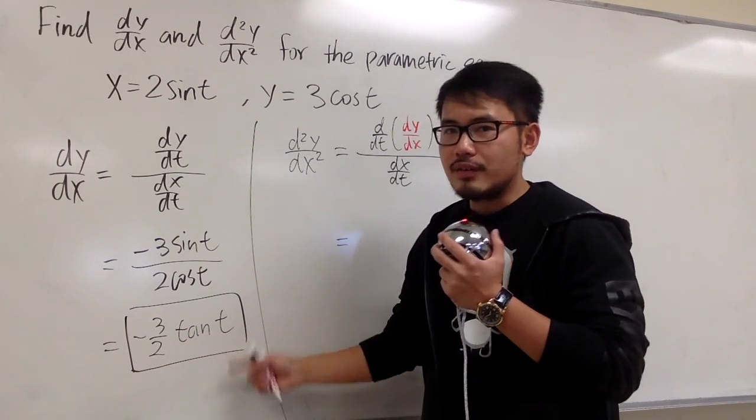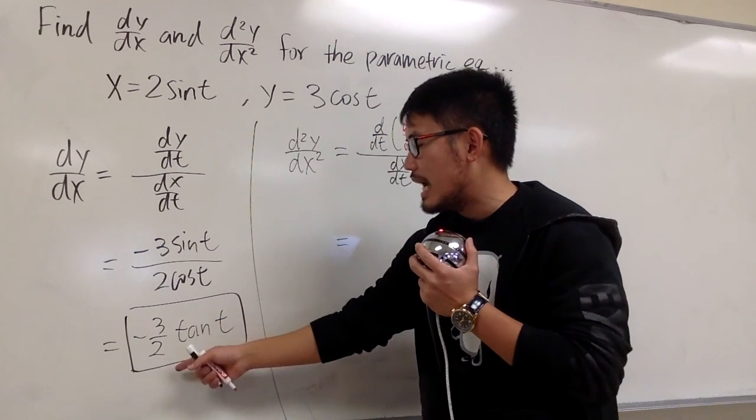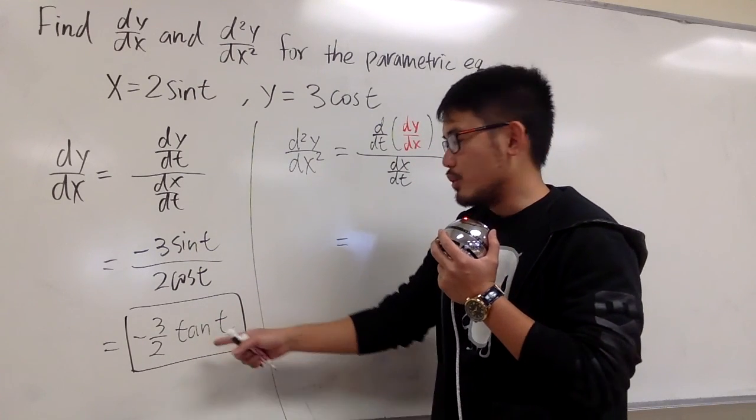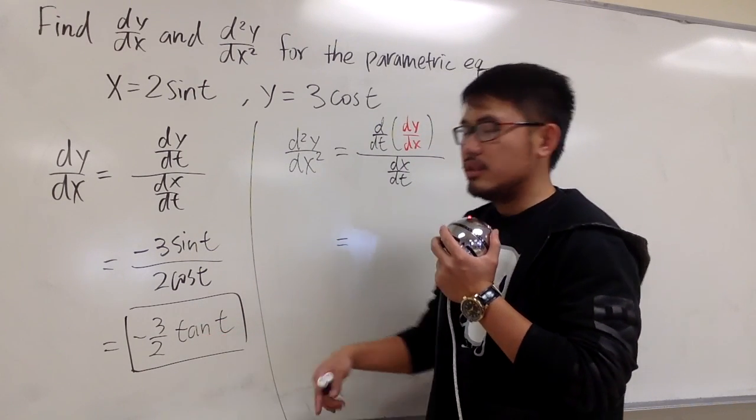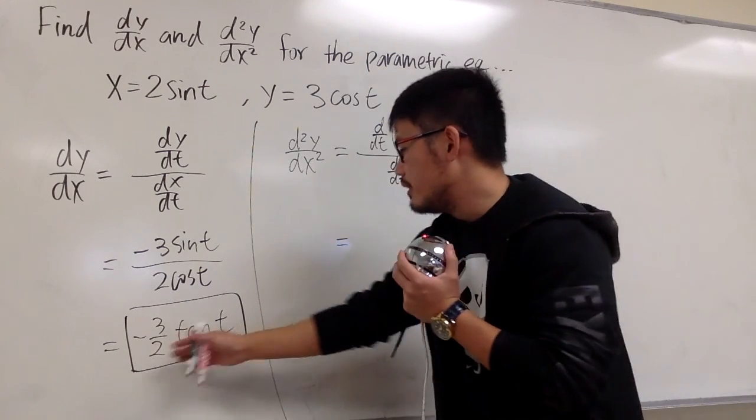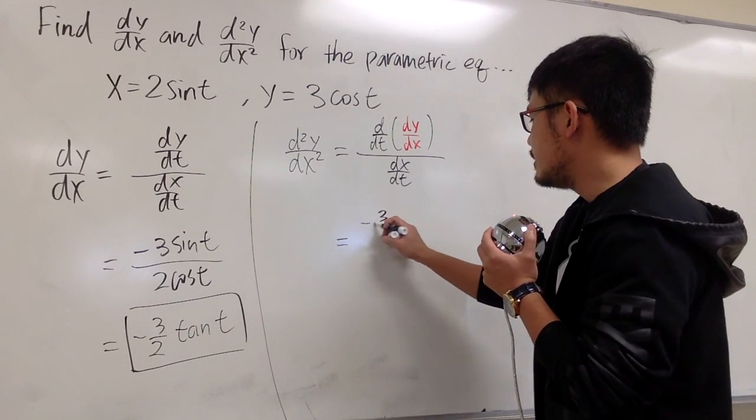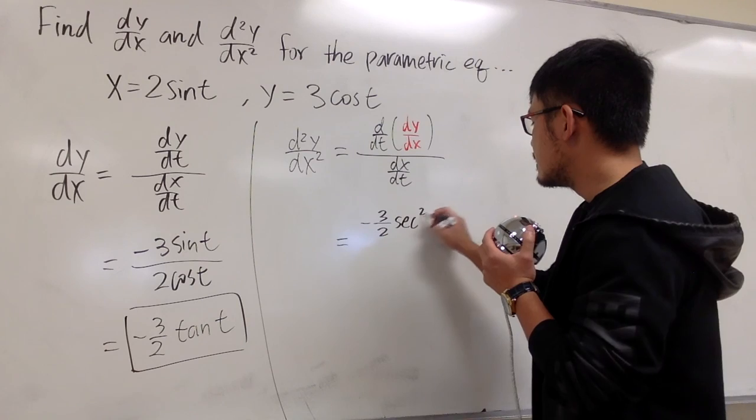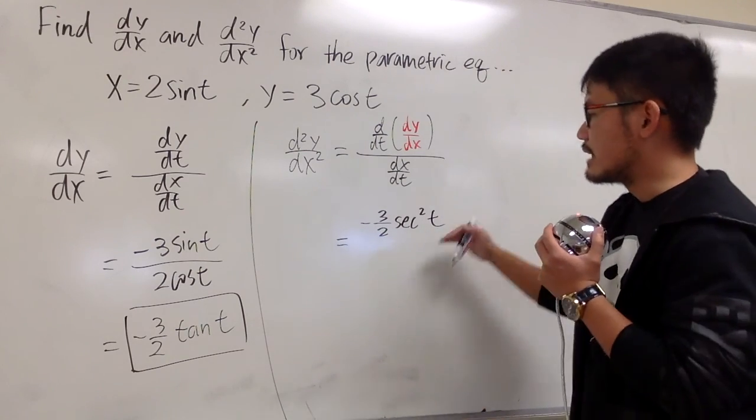So we just have to ask ourselves, what's the derivative of negative 3/2 tangent t? Well, the derivative of tangent is secant squared, so this is going to give us negative 3/2 secant squared t, and that's the top portion.